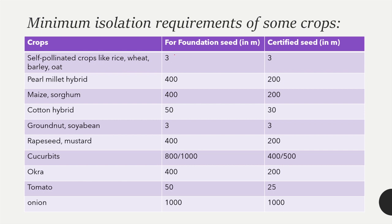Minimum isolation requirements: for self-pollinated crops like rice, wheat, and barley, the isolation distance for foundation and certified seed is 3 meters. For pearl millet hybrid, foundation seed requires 400 meters and certified seed 200 meters.